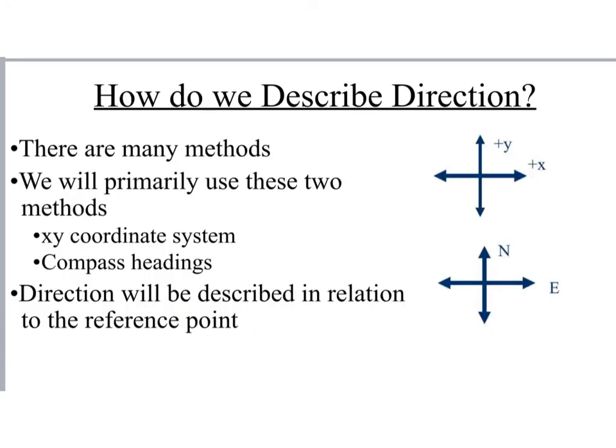So when we're talking about describing a vector in terms of directions, there are a bunch of methods that can be employed. Primarily in our class, we're going to use two different methods. We're either going to use the x-y coordinate system. Where in this system, basically to the top of your x-axis, that's going to be all your positive y directions.